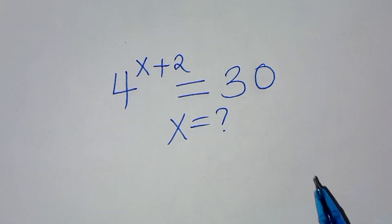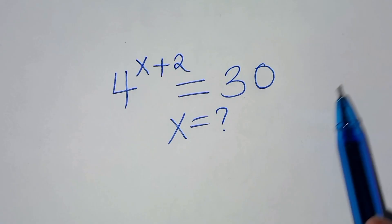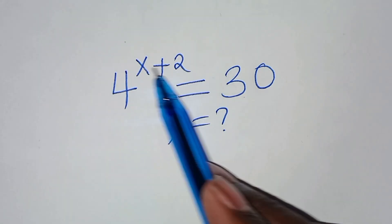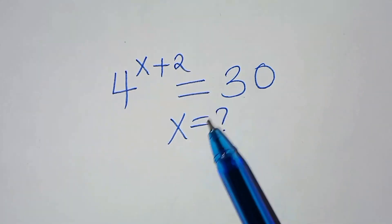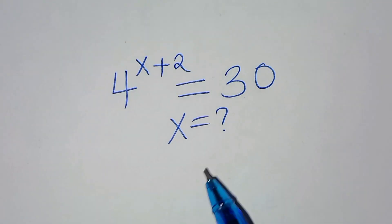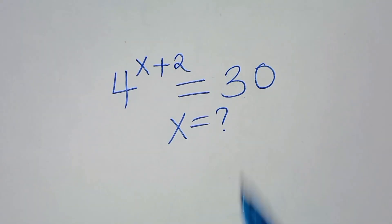Hello everyone, you are welcome to solve this nice exponential equation, which is 4 to the power x plus 2, and this is equal to 30. So what is the value of x?